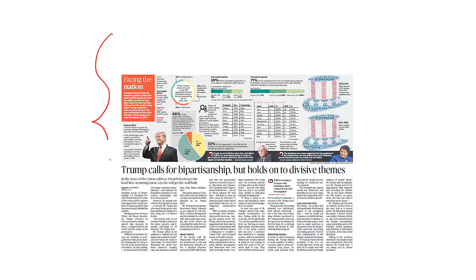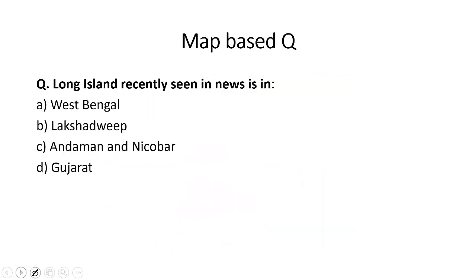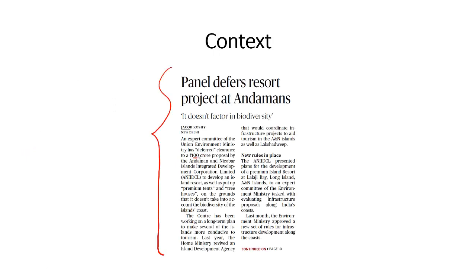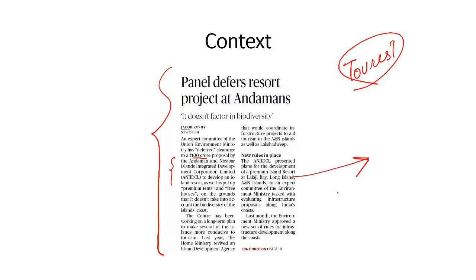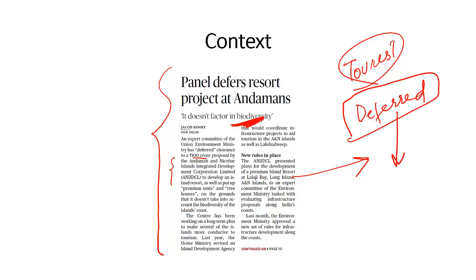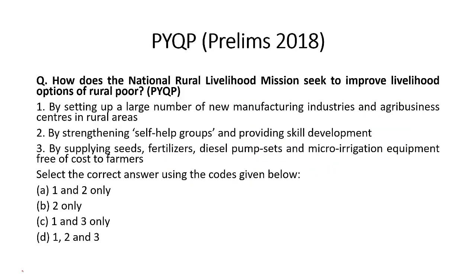The context is the State of the Union address by President Donald Trump. Map-based question: Long Island, recently seen in news, is in the Andaman and Nicobar Islands. Context: a ₹100 crore proposal by the Andaman and Nicobar Integrated Development Corporation Limited to develop certain islands as tourist attractions was deferred by the Expert Committee of the Union Environment Ministry because the project does not factor in the biodiversity of the region. Previous year's prelims question on National Rural Livelihood Mission: the answer is 'B only' — by strengthening self-help groups and providing skill development.